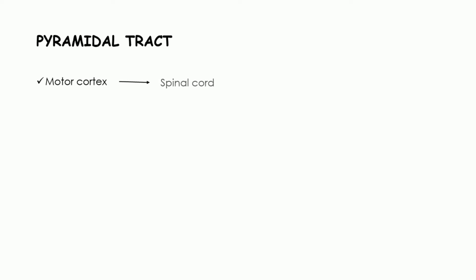Why are these tracts called pyramidal? Anteriorly in the medulla we have two projections which are the pyramids of the medulla, and these fibers pass through these pyramids — hence they are called the pyramidal tract. So the pyramidal tract refers to the fibers from the motor cortex passing through the pyramids of the medulla, which are present anteriorly.